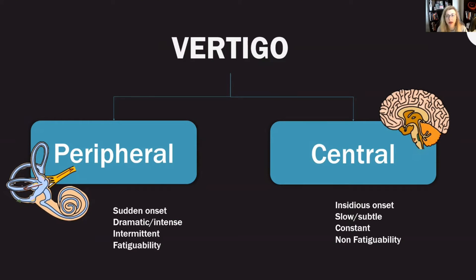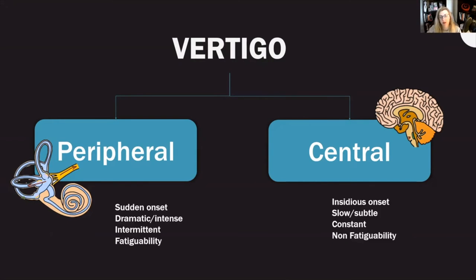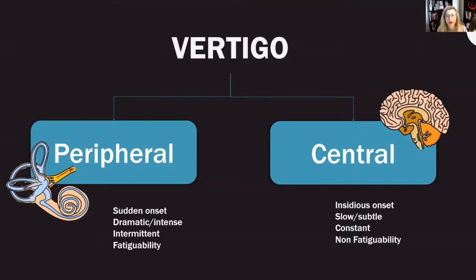So let's see what she says about peripheral versus central vertigo. She claims these present differently, which is 'very handy.' Things go off the rail early here — I just told you how vestibular neuritis and posterior circulation stroke can present in a very similar manner, so not so handy.